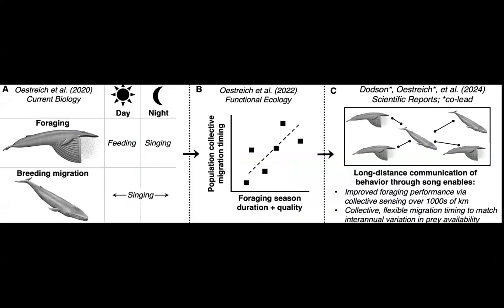To summarize the blue whale work: we used passive acoustic monitoring and biologging tags to understand that blue whales have an acoustic signature of their transition from foraging to breeding migration. We used that acoustic signature in relation to ecosystem phenology to understand that this population is very flexible in the timing of breeding migration. And using simulations compared to empirical observations, we assessed that these animals are very likely eavesdropping on one another's behavioral state to make better-informed and more collective decisions about when to migrate.